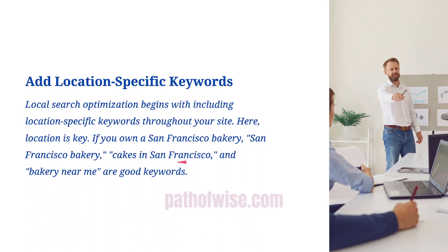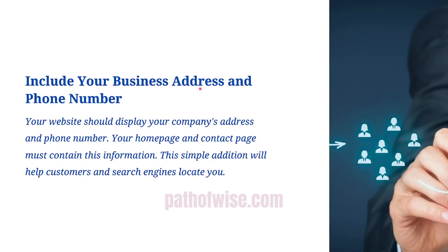For example, you can use keywords like 'San Francisco bakery,' 'San Francisco cake bakery,' 'cakes in San Francisco,' or 'bakery near me.' These are the keywords that, when someone searches on Google, will help Google show your website to that user — indicating that your website ranks for these terms and they should visit it.